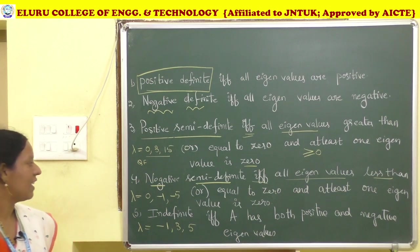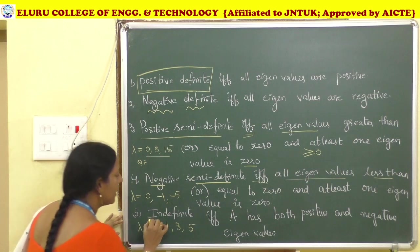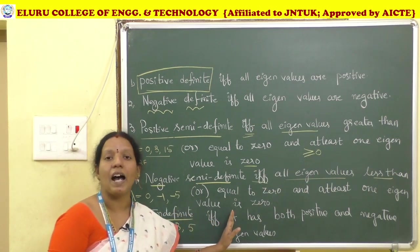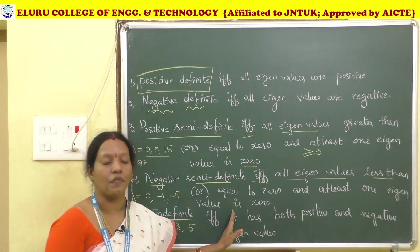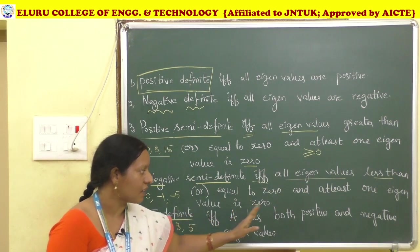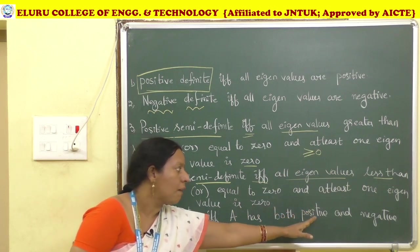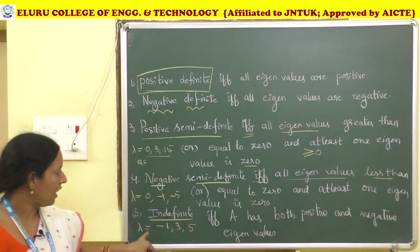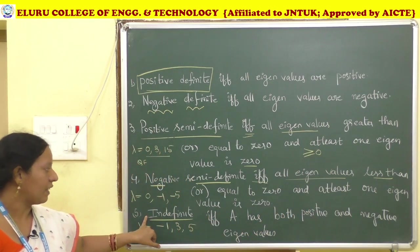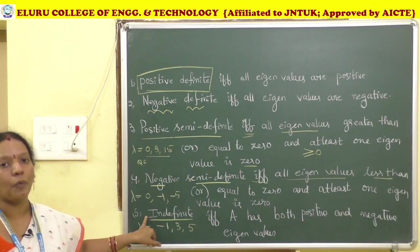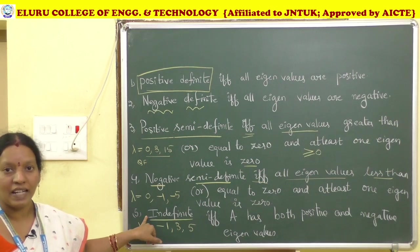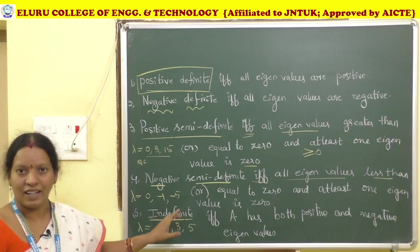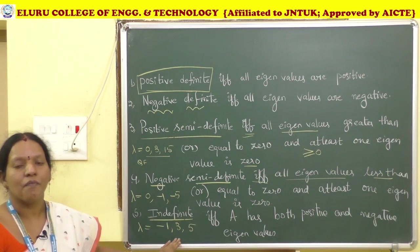Indefinite: if the eigenvalues of matrix A have both positive and negative values, then the given quadratic form is indefinite in nature.